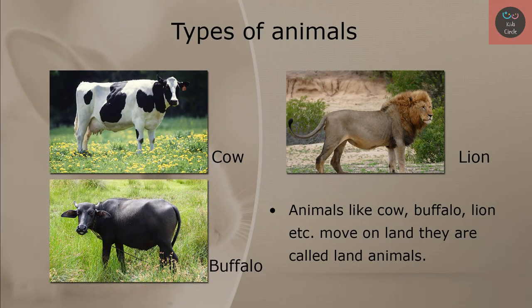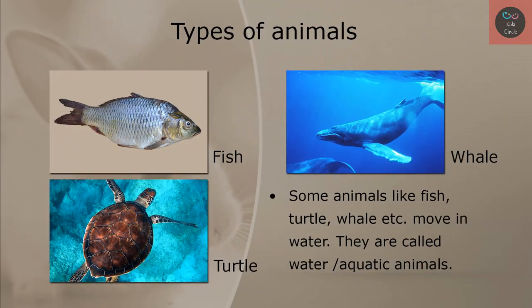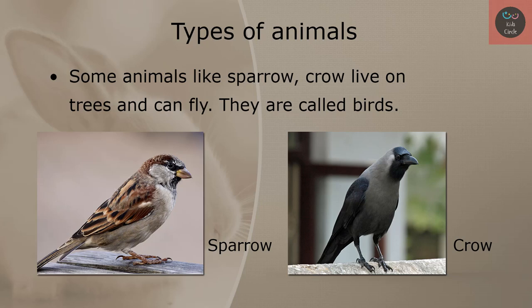Animals like cow, buffalo, lion, etc. move on land. They are called land animals. Some animals, like fish, turtle, whale, etc. move in water. They are called water or aquatic animals. Some animals, like sparrow, crow, etc. live on trees and can fly. They are called birds.